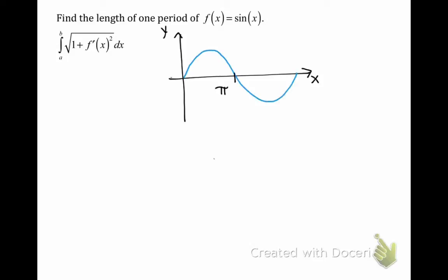We know that sine of 0 is equal to 0, and that the graph also crosses the x-axis at x equals pi and at x equals 2 pi. We also know that its y values are between 1 and negative 1.